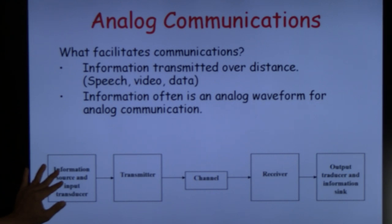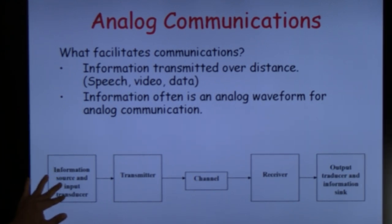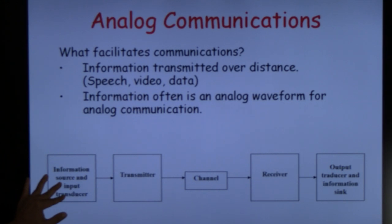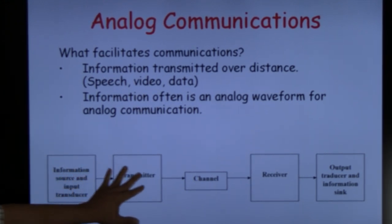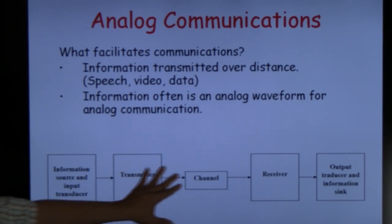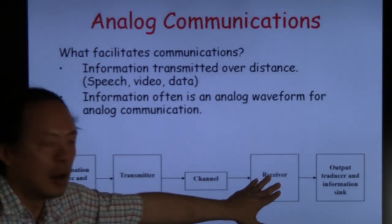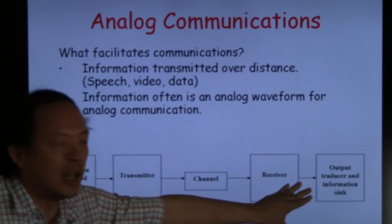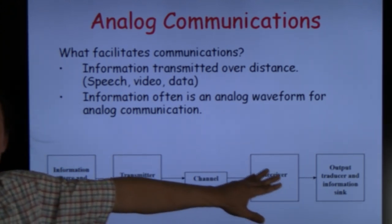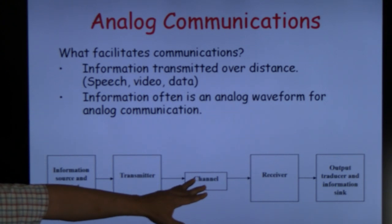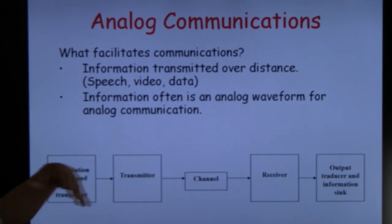Prior to the transmitter, you have an information source and information transducer. The information source could very well be my speech. The transducer could be a microphone that converts my speech into an electrical signal before it's transmitted over the channel, which is a pair of copper wire. And at the receive end, it is transduced back into a speech signal so that we can consume it.